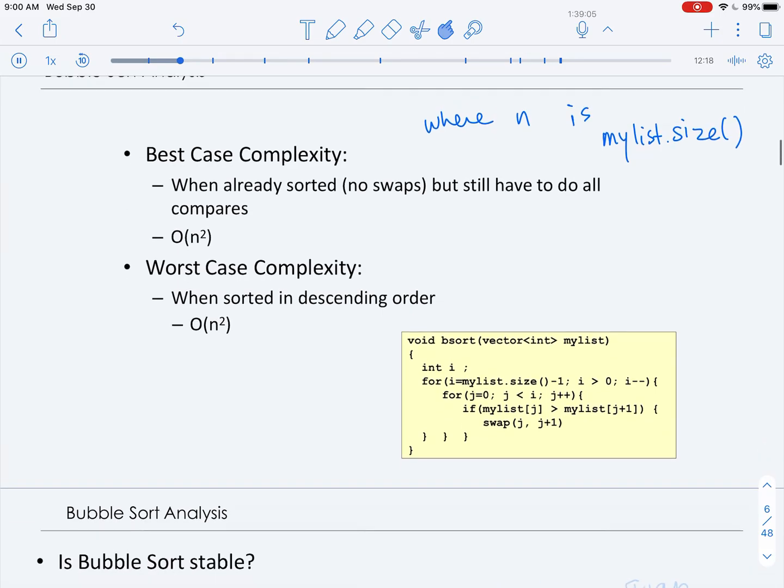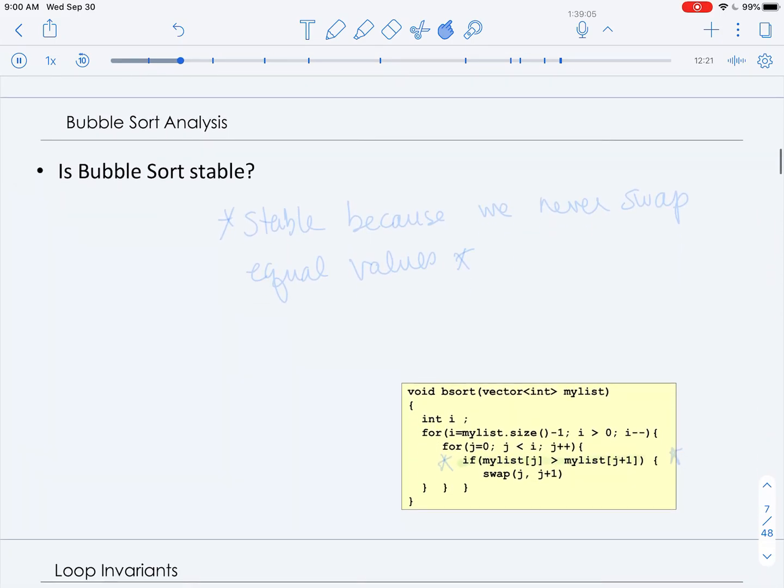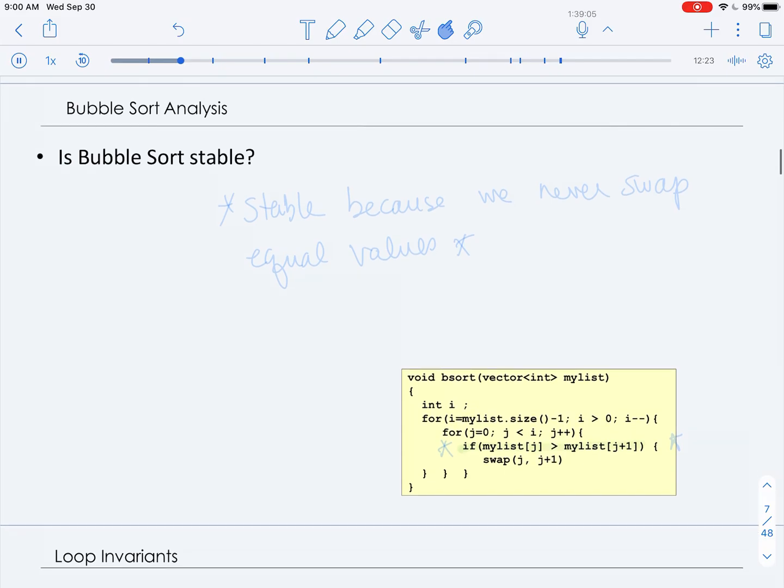Now, is bubble sort stable? And so we could show that bubble sort is indeed stable. And the line that gives us this is that if statement right there. So we're only swapping. We can observe that bubble sort is stable because we never swap equal values. And because of that line that I highlighted, we would never swap values that were the same, so they would stay in the same order. So that's why bubble sort is indeed stable.